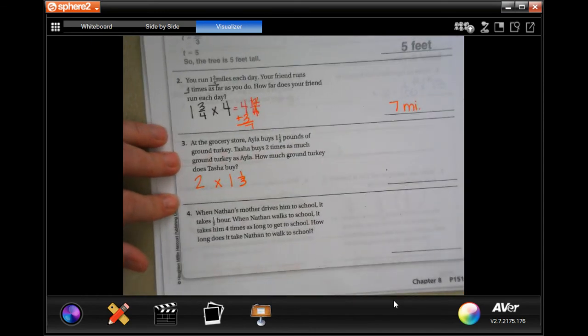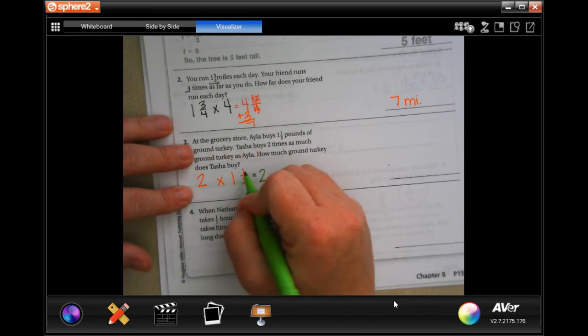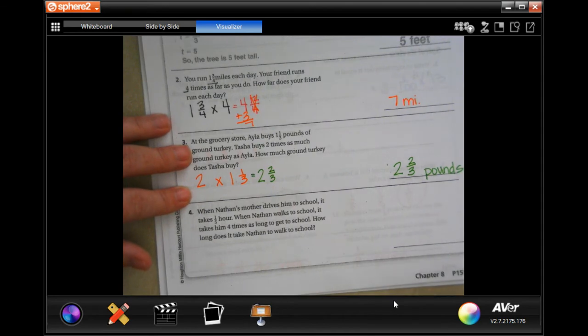So, here we go. Two times one is two. Two times one again is two, and I keep my denominator, two and two-thirds pounds.